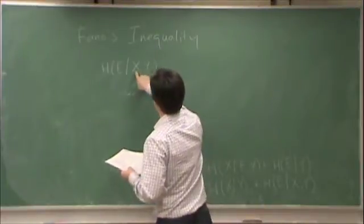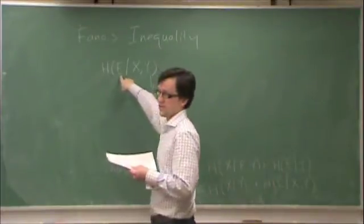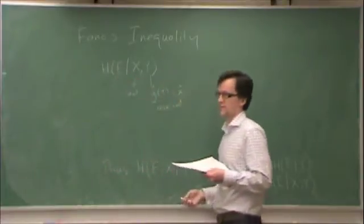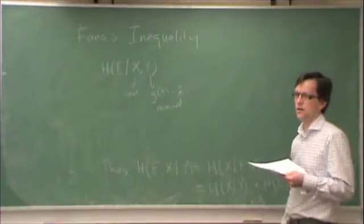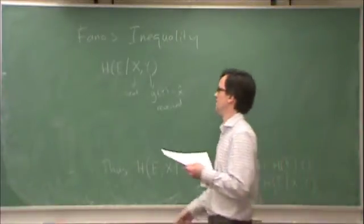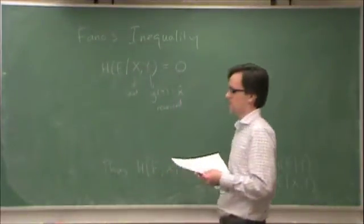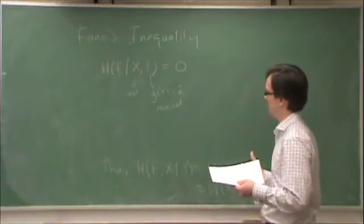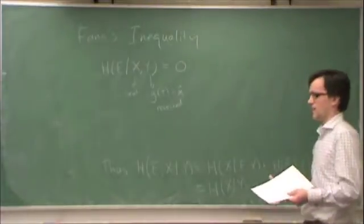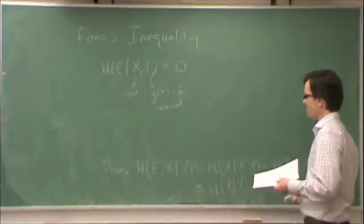So, if I know both x and x hat, then e is deterministic. In other words, e is not random, so what's the entropy of something that's deterministic? It's zero. So, therefore, the entropy of e given x and y is zero. In other words, if you know enough that a certain random variable is no longer random, then its entropy is zero.